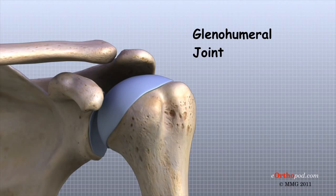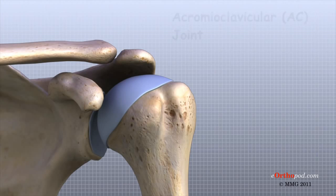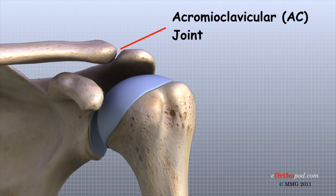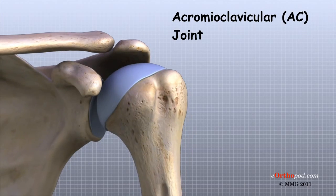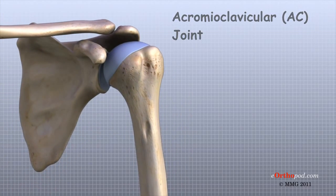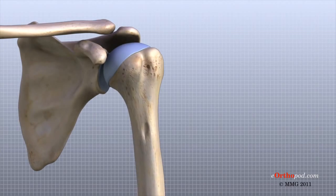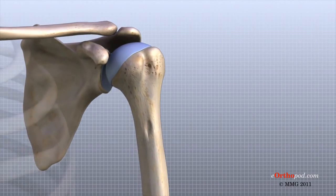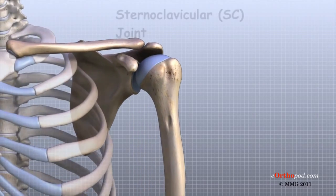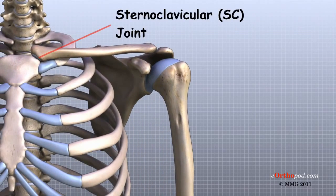This shallow socket is called a glenoid. The acromioclavicular, or AC joint, is where the clavicle meets the acromion. The sternoclavicular, or SC joint, supports the connection of the arms and shoulders to the main skeleton on the front of the chest.